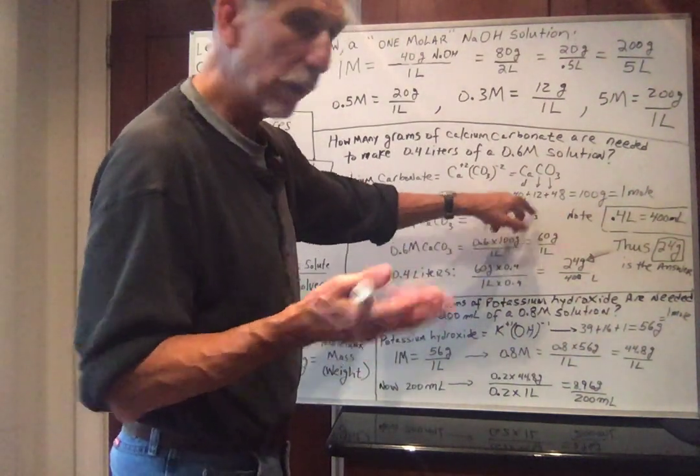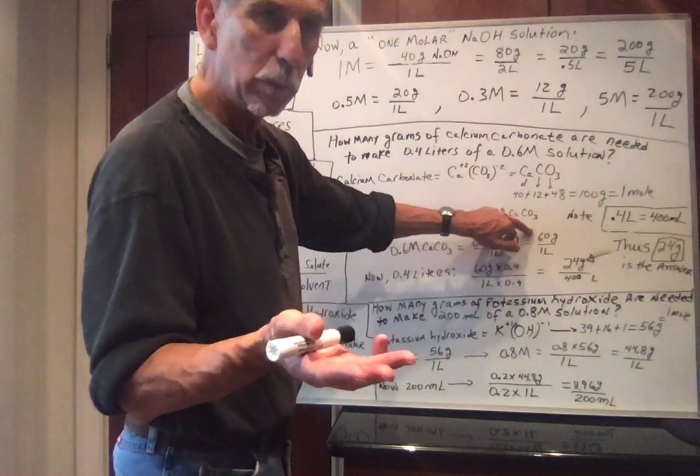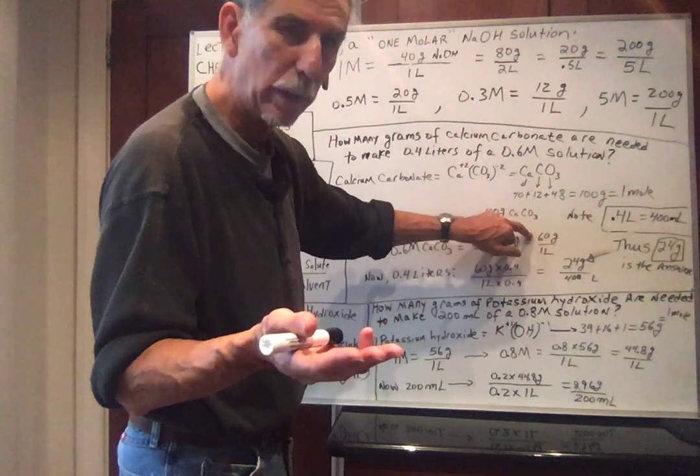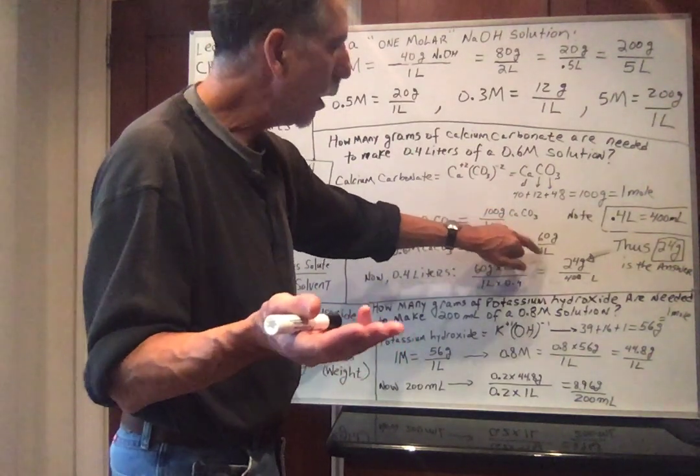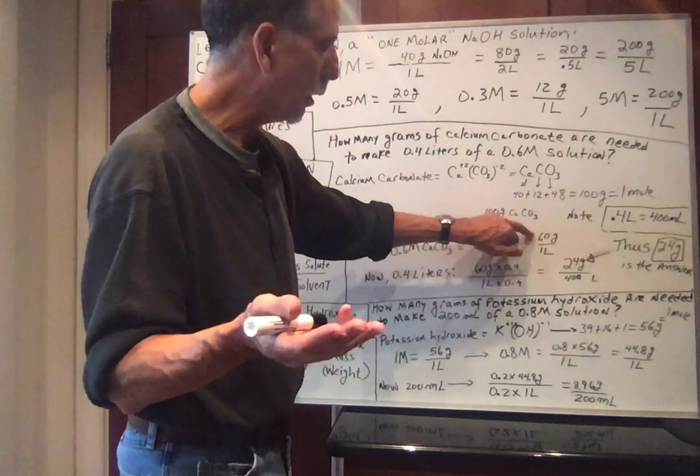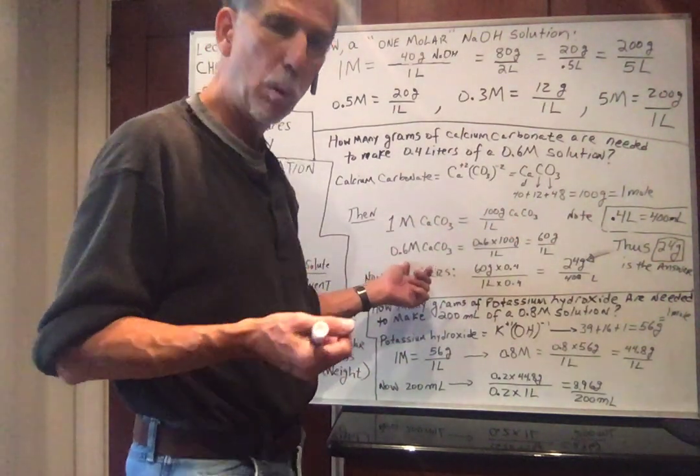60 grams in one liter is a 0.6M solution. Same as 120 grams in two liters, or 180 grams in three liters, same ratio, same proportion, or 30 grams divided in half in half a liter. Divide that by a half, that by a half, you get 30 grams in half a liter is also a 0.6 molar solution.